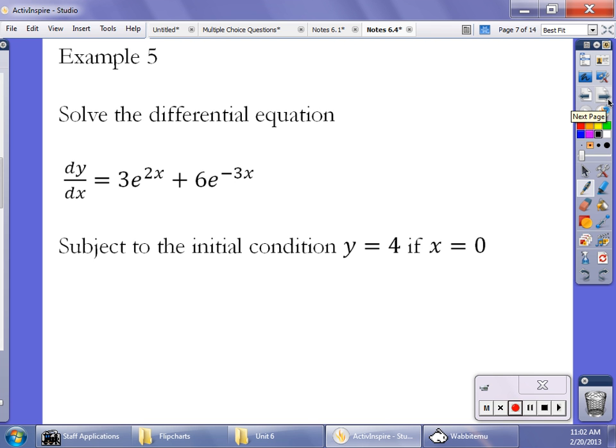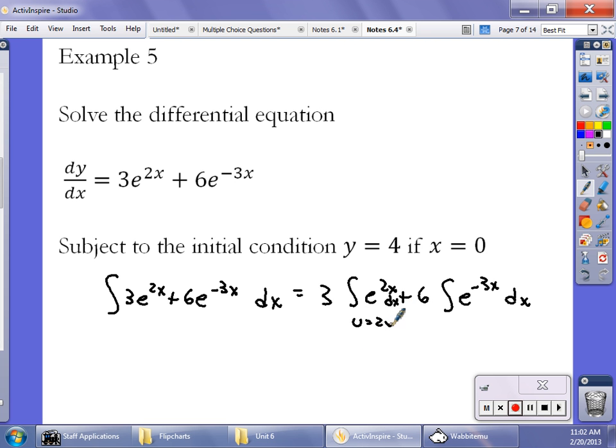Okay. So if I have the derivative as given to me as this, and I have the initial condition y is 4 when x is 0, if I integrate that derivative, integrate the 3e to the 2x plus 6e to the negative 3x dx. I integrate these individually, so I'm going to write it as 3 times the integral of e to the 2x plus 6 integral of e to the negative 3x dx. In this case, in the first one, u has to be 2x. So du is 2 dx. In this case, u is negative 3x, and du is negative 3 dx.